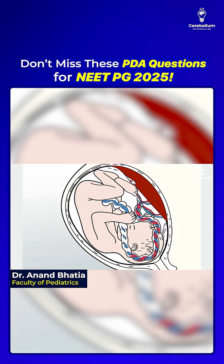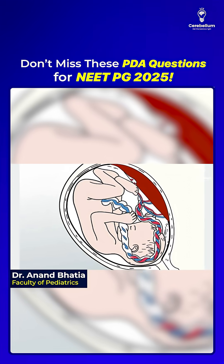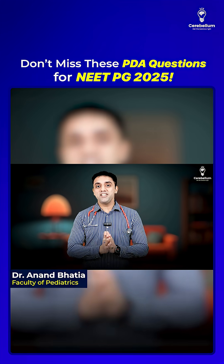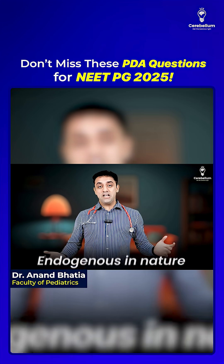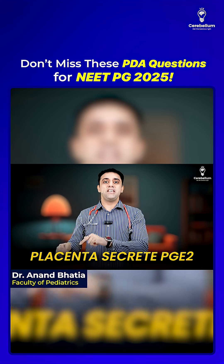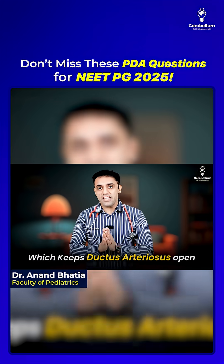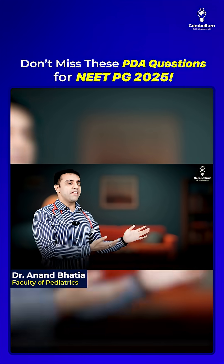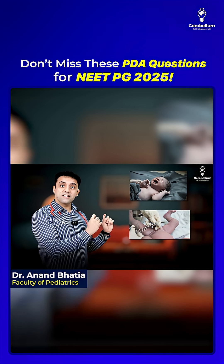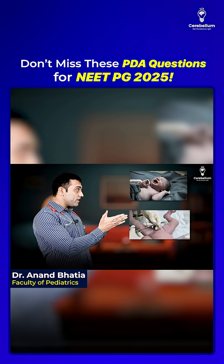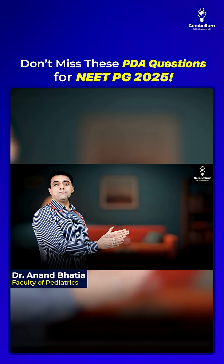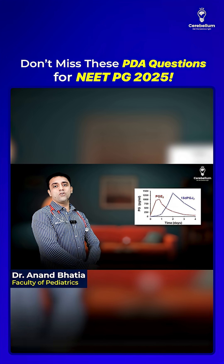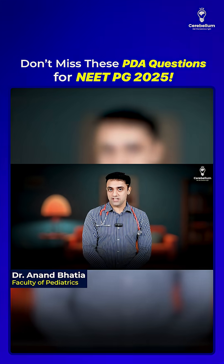Regarding PGE2: in fetal circulation, the placenta secretes PGE2, which is endogenous and keeps the ductus arteriosus open. Once the baby is born and the placenta is cut, PGE2 levels fall — and that is how the ductus arteriosus closes naturally.